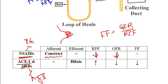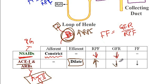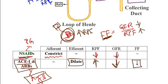For ACE inhibitors and ARBs, they block angiotensin 2, which is responsible for constriction of the efferent arteriole. So now there will be dilation of the efferent arteriole, resulting in elevated renal plasma flow. Since there is less pressure buildup, GFR decreases. Filtration fraction is GFR, which is decreased, divided by RPF, which is increased — so there is a decreased filtration fraction with ACE inhibitors and ARBs like losartan.